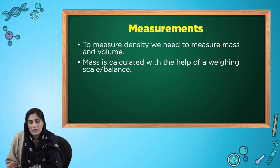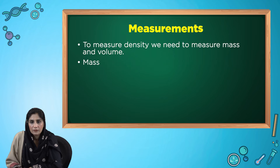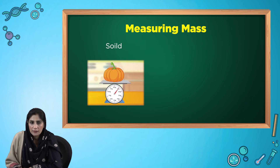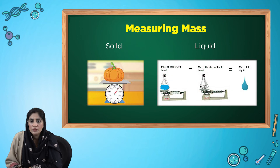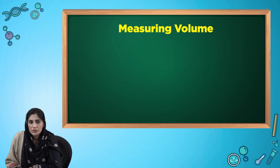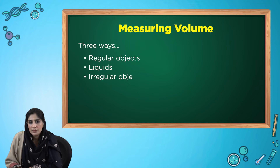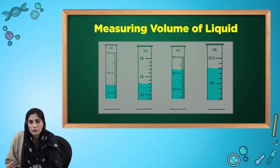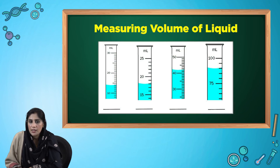To measure density, we need to calculate mass and volume. To measure the mass of a solid, the object is placed on a weighing scale and the reading is taken. To measure the mass of a liquid, we need to follow certain steps, which will be explained later during the experiment. To measure the volume of regular objects, measure the length, width and height with a measuring ruler or scale, then multiply the values to get the reading. For measuring the volume of liquids, you need graduated cylinders and take the reading at eye level.